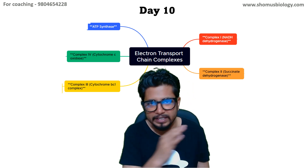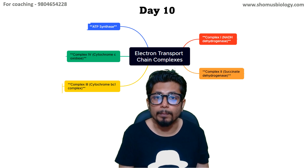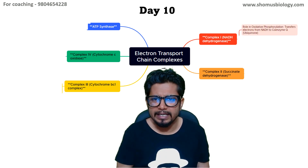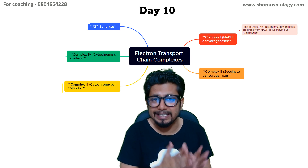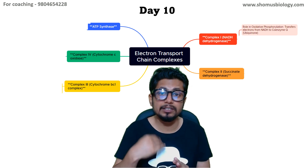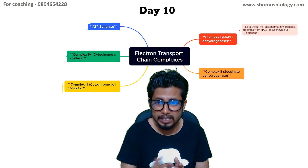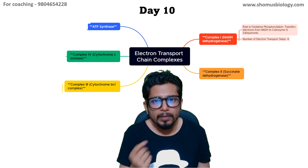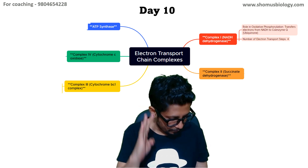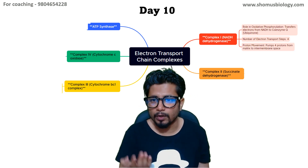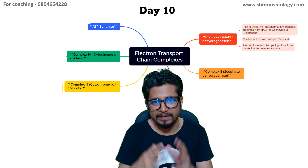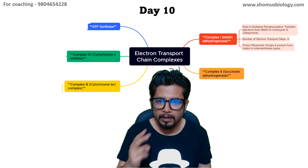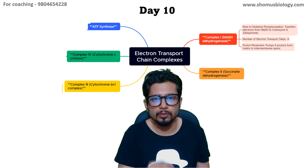The role of Complex I, or NADH dehydrogenase, is to transfer electrons from NADH. NADH donates electrons to coenzyme Q, also known as ubiquinone. The number of electrons transported here is four, and the number of protons pumped from the matrix to the intermembrane space is also four.